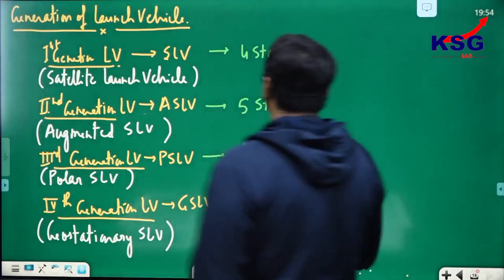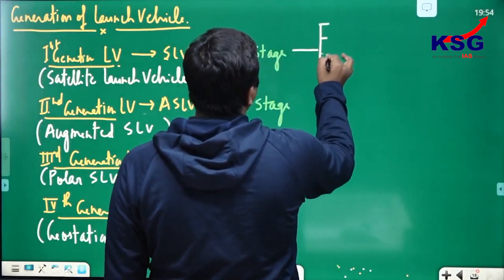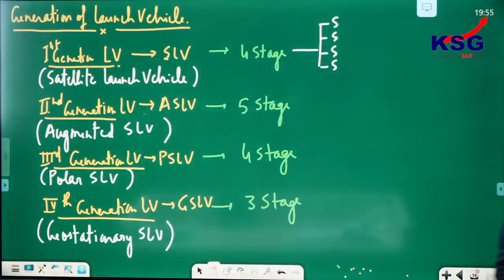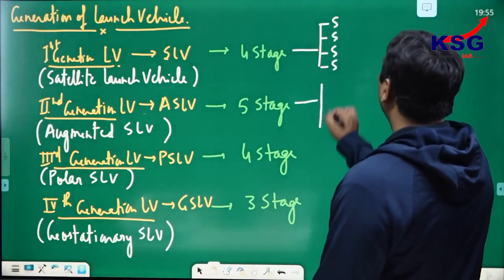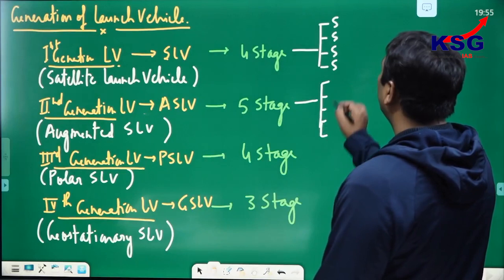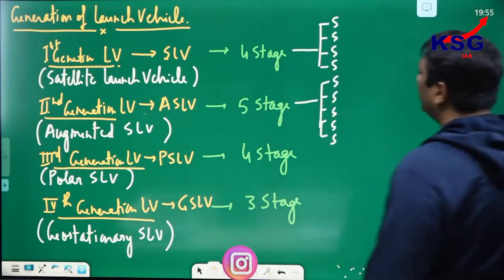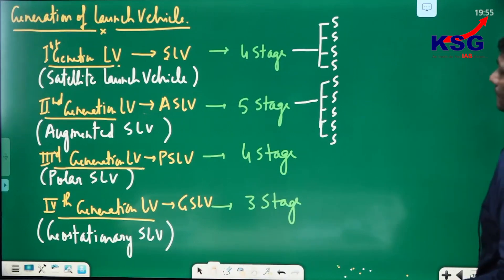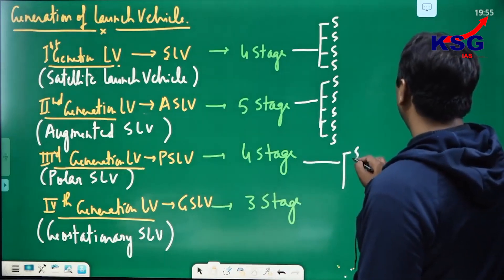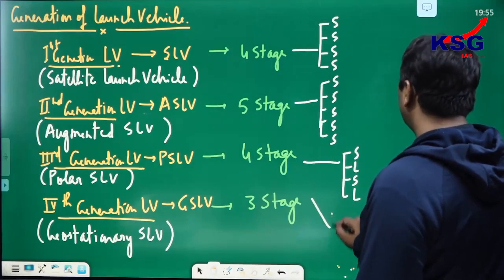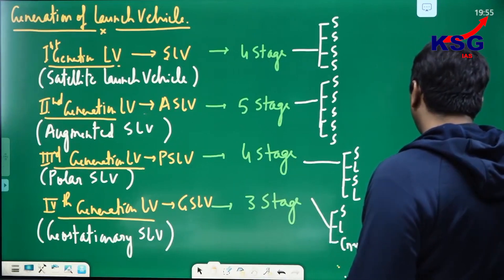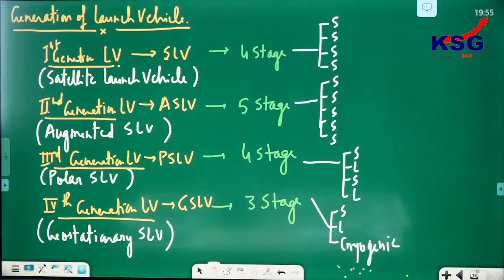Looking at the stages: for SLV, stages 1, 2, 3, 4 — all S, meaning solid nature of propellant is used. For ASLV, stages 1 through 5, also solid nature of propellant. For the 4th generation GSLV, the stages use a combination of solid and liquid propellants.